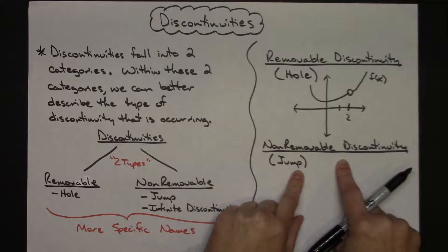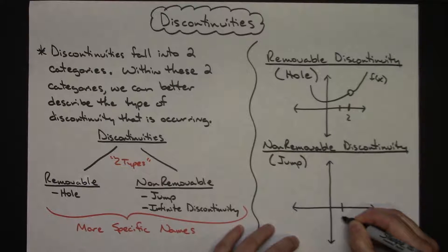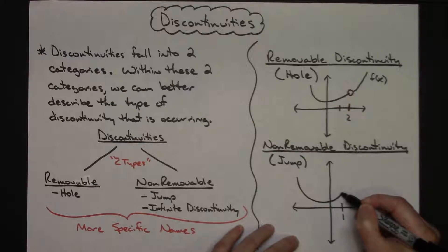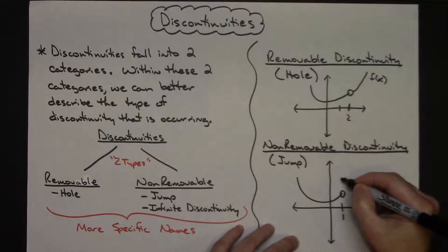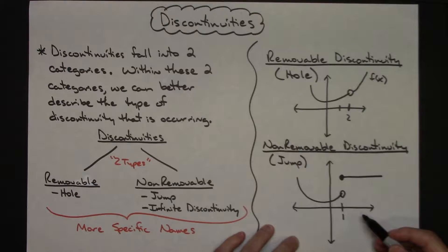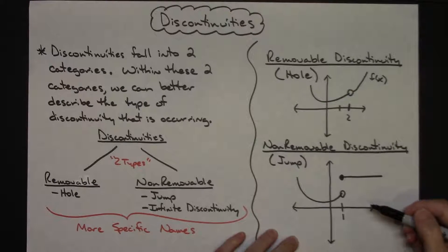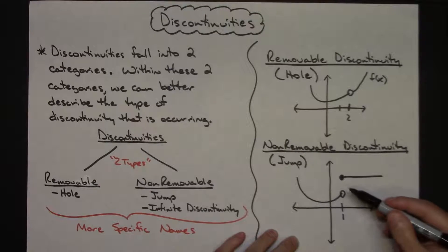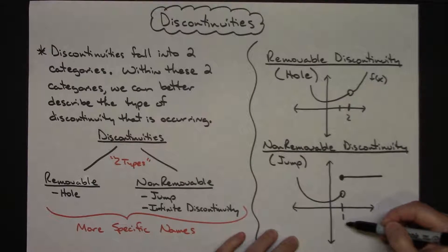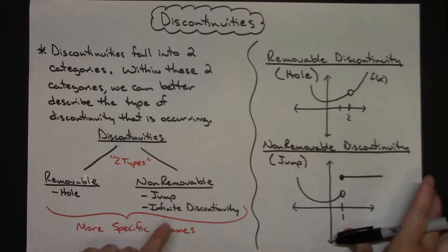A non-removable discontinuity that is a jump is also pretty clear-cut. Let's say we've got our graph coming along with an open dot at x = 1, and then the rest of the graph picks up at a different y-value. Clearly there's a jump — in order to draw this I'd have to lift my pencil. This is a non-removable discontinuity; more specifically, it's a jump occurring at x = 1. You always want to specify where it's occurring.